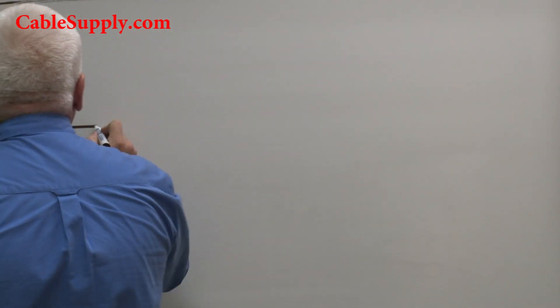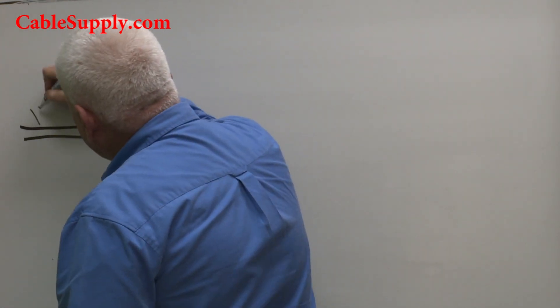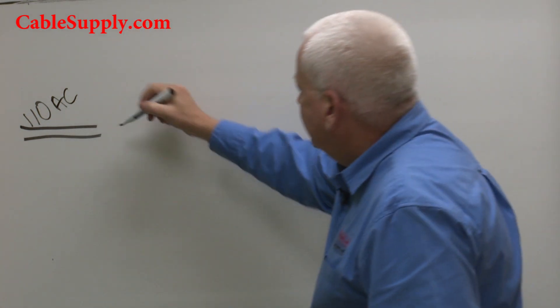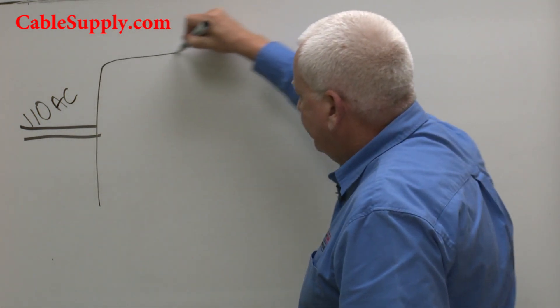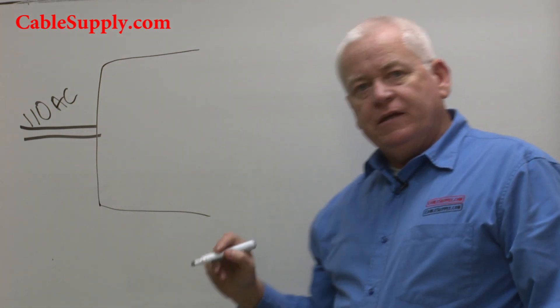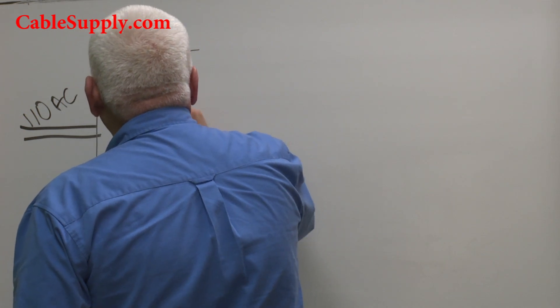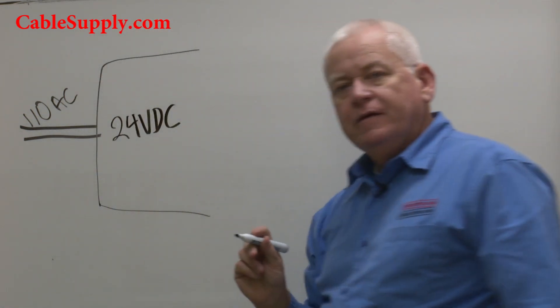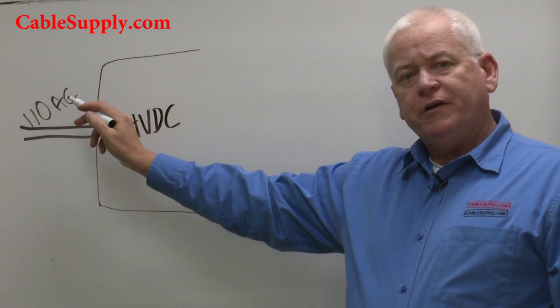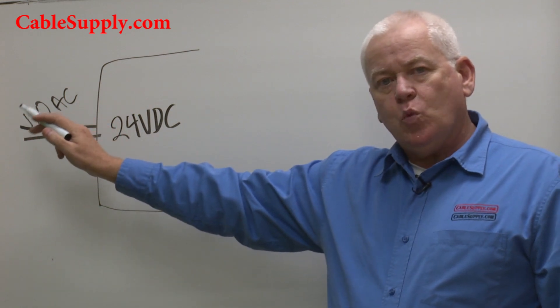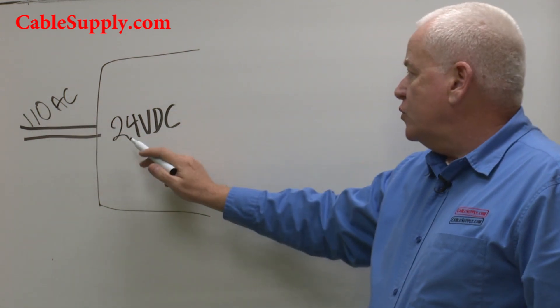Pay attention to me and what happens here. 110 AC current goes into the UPS. The UPS then converts it to 24 volts DC. So it converts not only from AC alternating current to DC direct current, but it also changes the voltage from 110 AC to 24 volts DC.